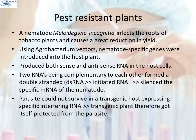A nematode called Meloidogyne incognita infects the roots of tobacco plants and causes a great reduction in yield. The RNAi method was used to avoid this infestation. Using Agrobacterium vectors, nematode-specific genes are introduced into host plants. The introduction of DNA was such that it produced both sense and antisense RNA in the host cells. These two RNAs, being complementary to each other, formed a double-stranded dsRNA that initiated RNAi and thus silenced the specific mRNA of the nematode. The consequence was that the parasite could not survive in a transgenic host expressing specific interference RNA, and the transgenic plant therefore got itself protected from the parasite.